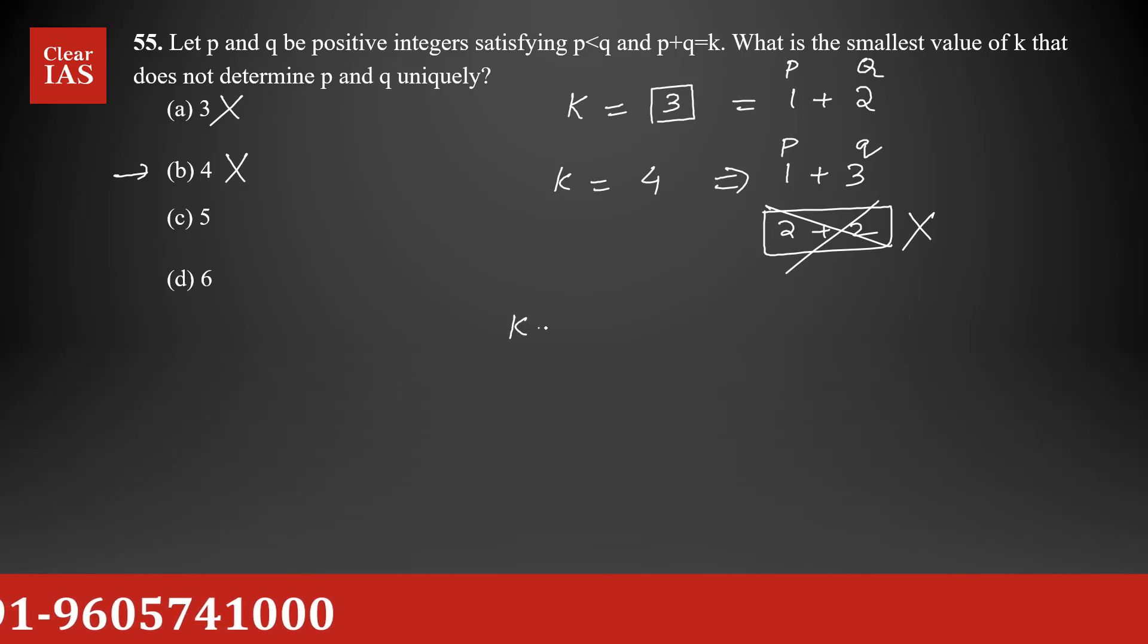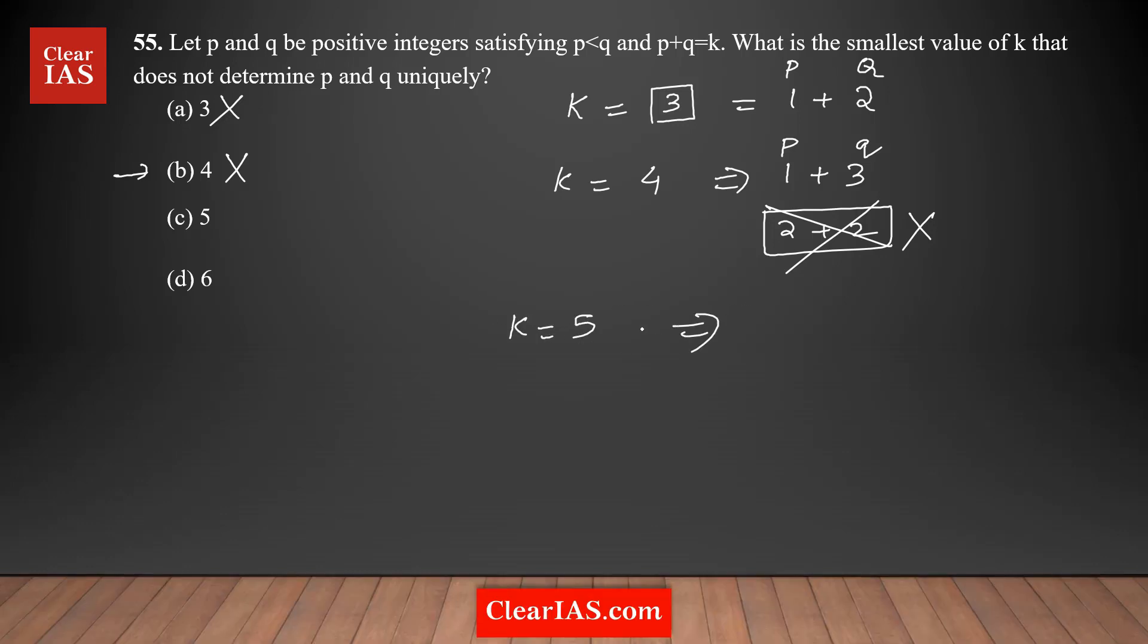The next option is K = 5. What are the different possibilities? Adding two numbers to get 5: 1 + 4 and 2 + 3. For the first one, 1 + 4 = 5, P = 1 (the smallest) and Q = 4. For the second one, P = 2 and Q = 3.